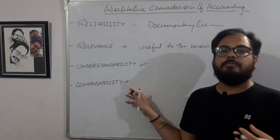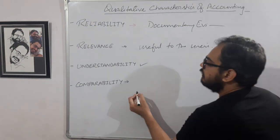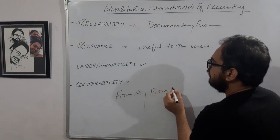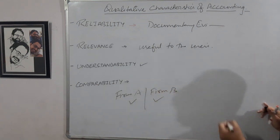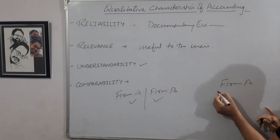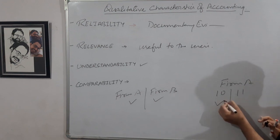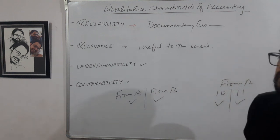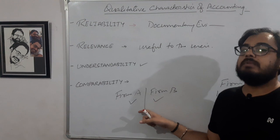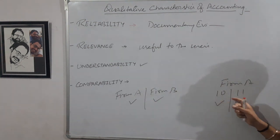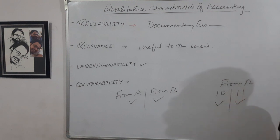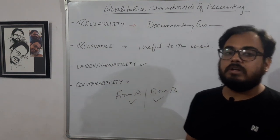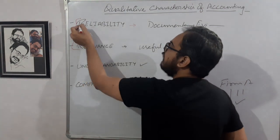Next is Comparability. We do comparability of one firm with another firm. Accounting facilitates the comparability of one firm with another firm engaged in the same line of business, or of the same firm across two different years. The financial performance can easily be compared. These are all the qualitative characteristics of accounting. The primary qualitative characteristics are RR — Reliability and Relevance.